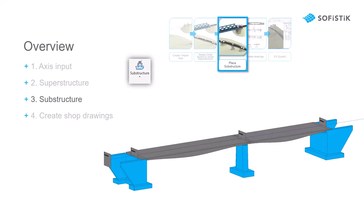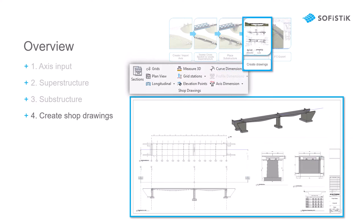We will create substructure geometries — three-dimensional elements that are placed at specific points along the axis alignment. We will also create shop drawings based on the three-dimensional geometry that we will create here.